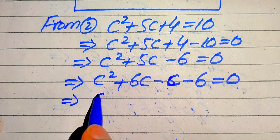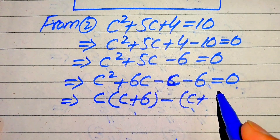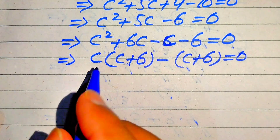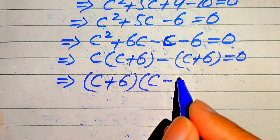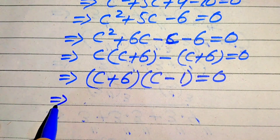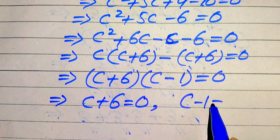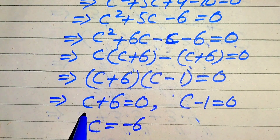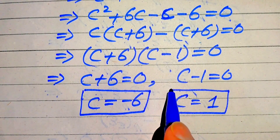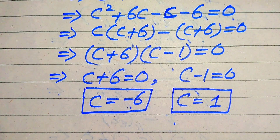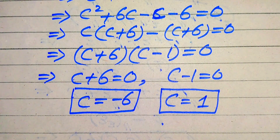Taking C common from the first two terms gives C(C + 6), and −1 common from the last two gives −1(C + 6). So (C + 6)(C − 1) = 0. This gives C = −6 (third root) and C = 1 (fourth root). These are all four roots of the given equation. Thank you for watching — please subscribe for more videos.